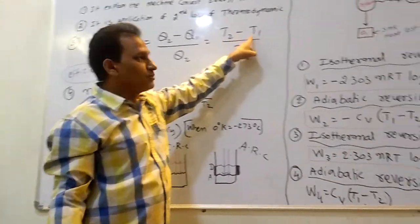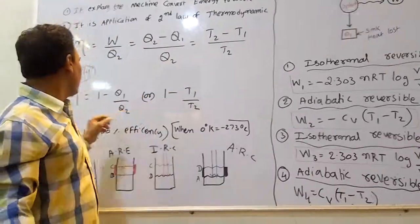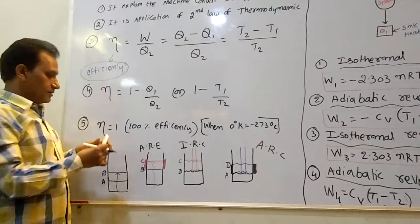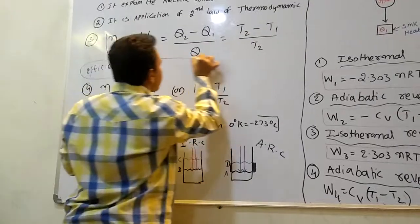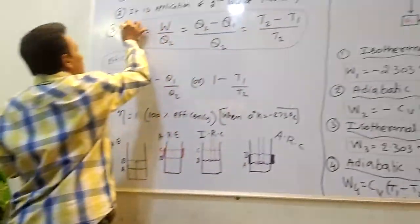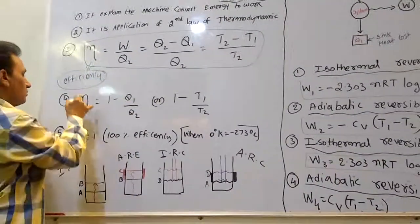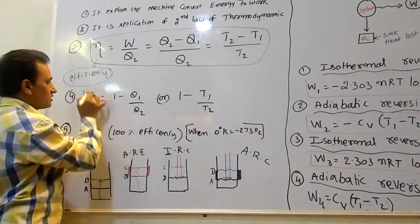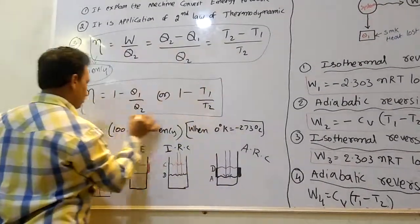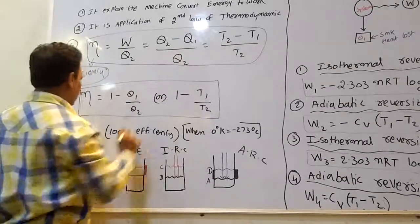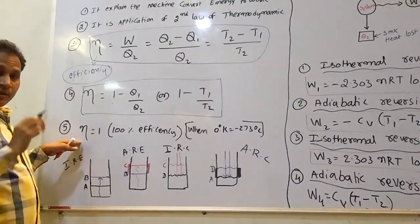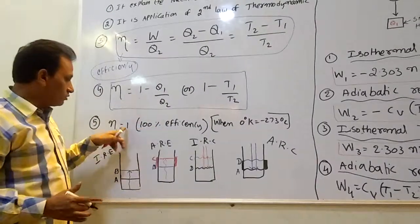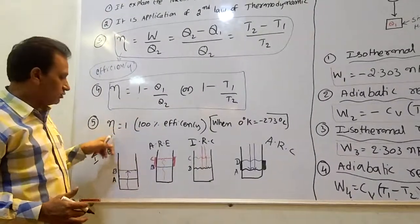Here Q1 means initial temperature and Q2 means final temperature. You can also write the efficiency equation as: nu = 1 minus Q1 by Q2. This is the equation to calculate the efficiency of the engine. If you take the common, that is 1 minus Q1 by Q2.